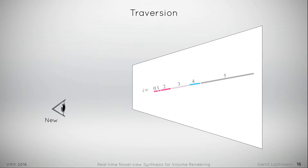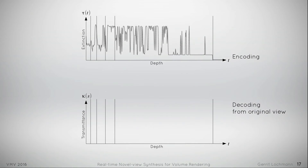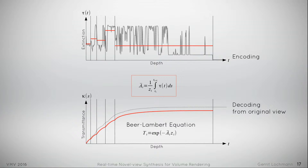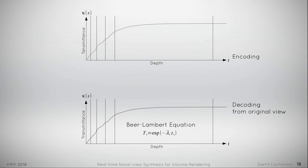Now we want to decode these segments analytically. The question is what information must each ray piece encode. We formulate two constraints on our analytic representation. First, when decoded from the original view, we expect the original color to be the result. Second, the segments will be decoded with the Beer-Lambert equation for a homogeneous matter. A naive approach would be to simply use the average extinction, but this would lead to a false result compared to the reference transmittance function, as reconstruction and reference lines drift apart. Instead, we apply the inverted Beer-Lambert equation with segment breaks as our control points at their specific depth values.